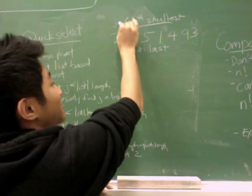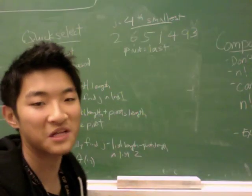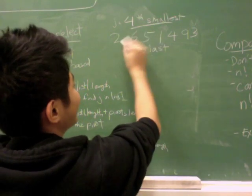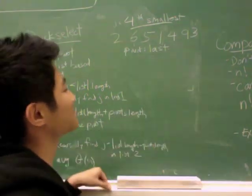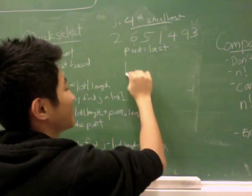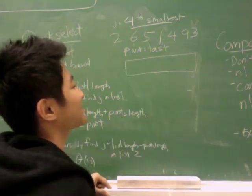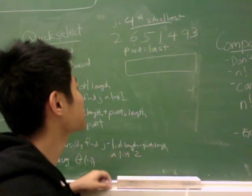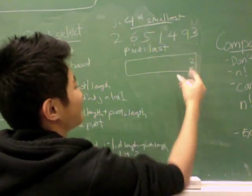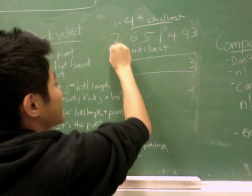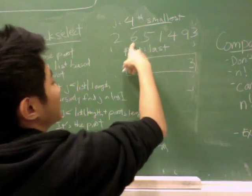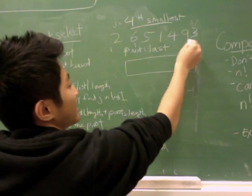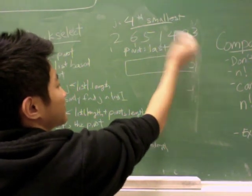So we're given that j equals four, we want to find the fourth smallest element and a human look tells us it's one, two, three, four. So four is the fourth smallest element and we'll prove that by going through QuickSelect. And so our pivot, we'll choose the last one just because.